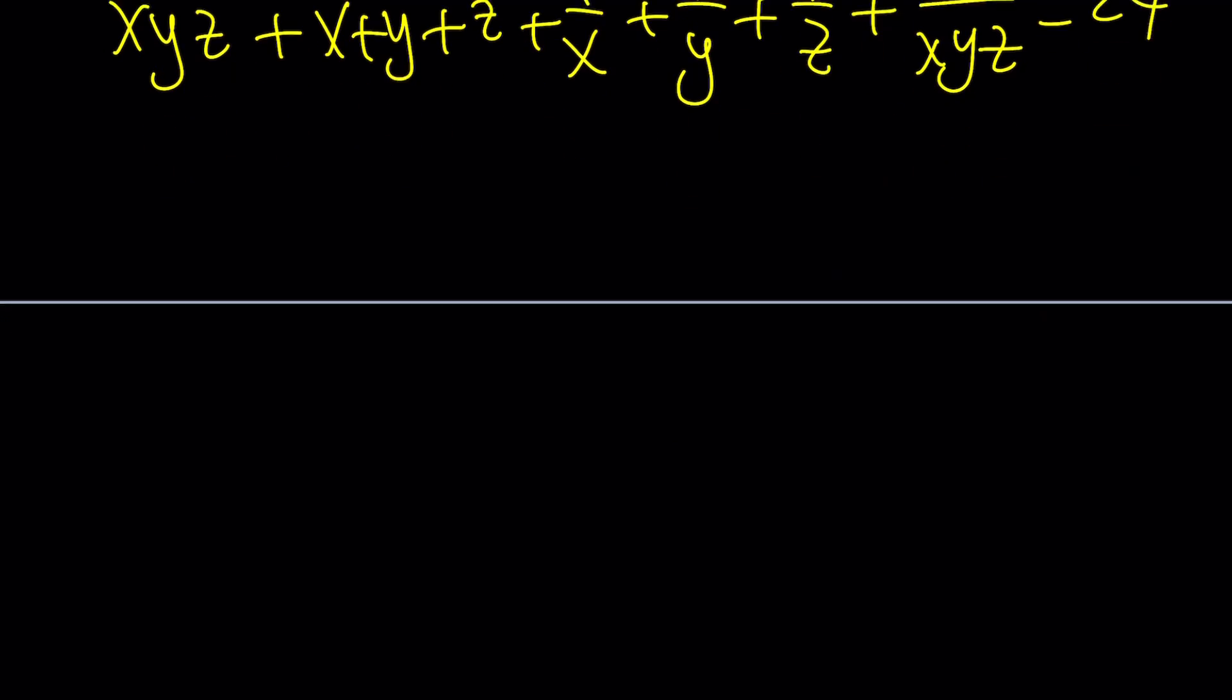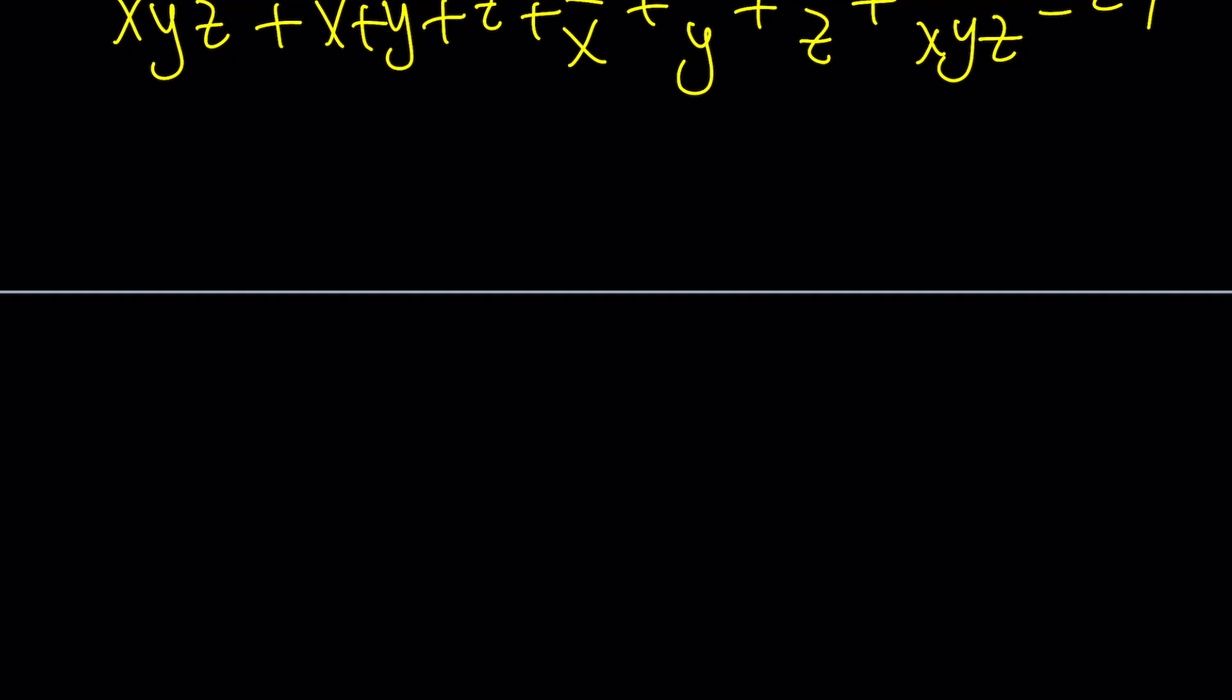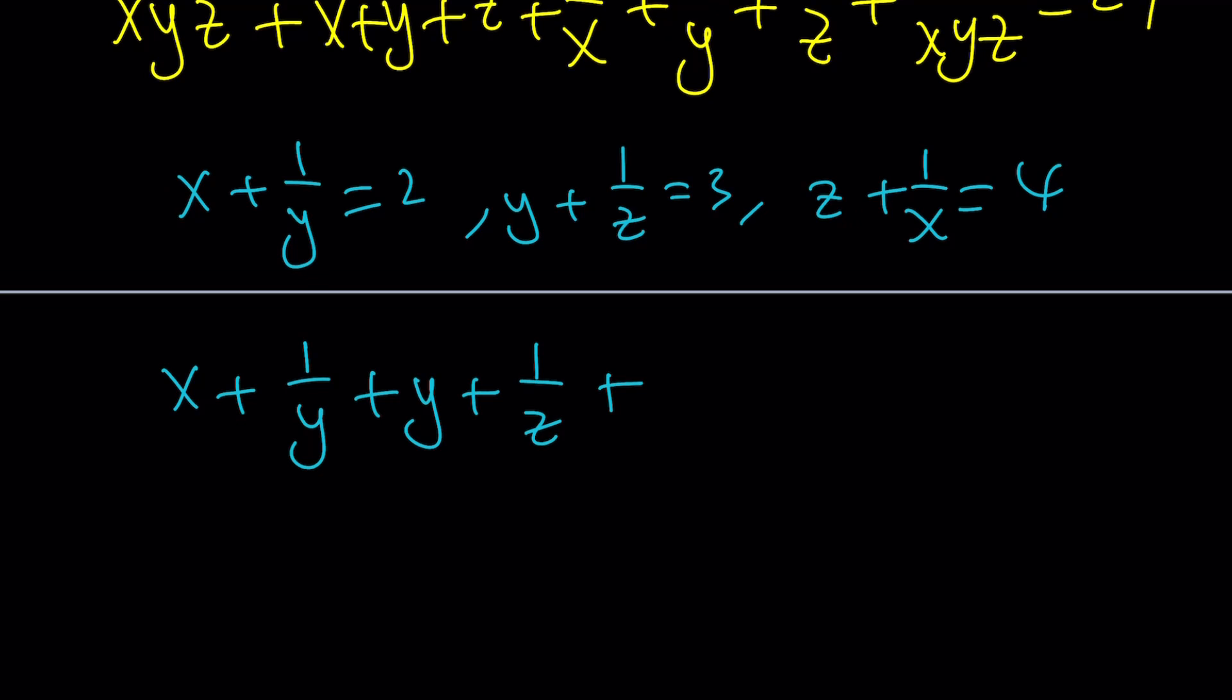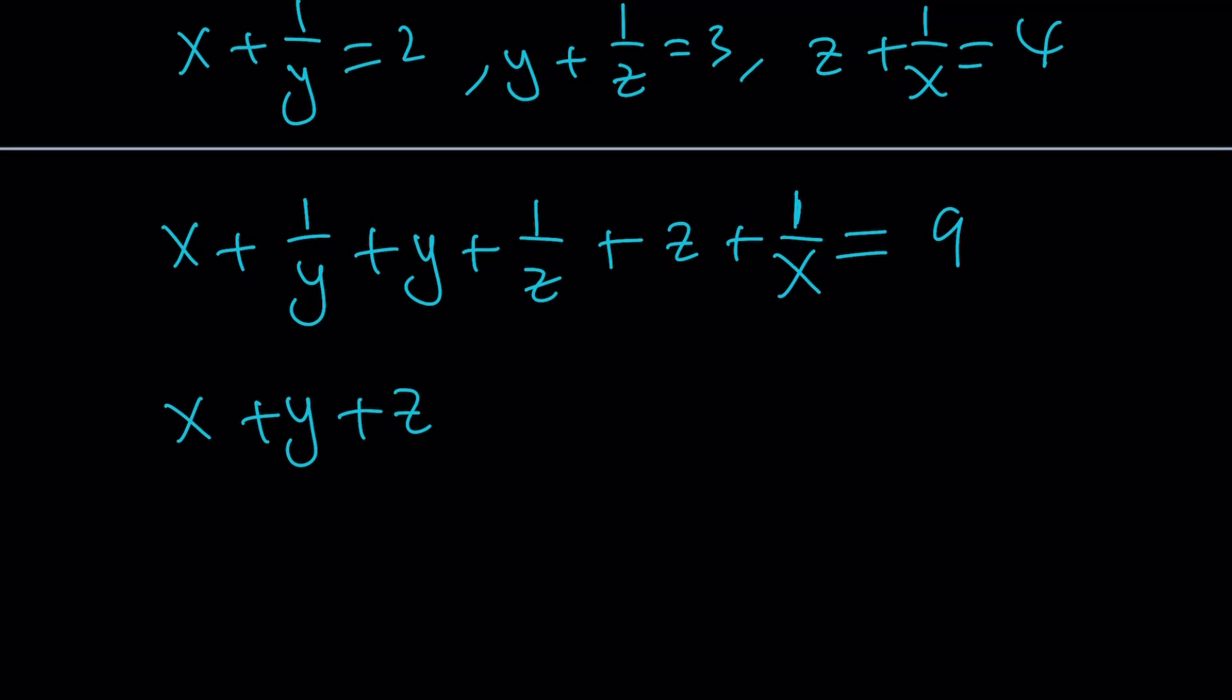So remember, what we did first was multiply these together, right? What were they? x plus 1 over y equals 2, y plus 1 over z equals 3, and z plus 1 over x equals 4. Now, we're going to go ahead and add them. Why? Because it's going to give us the sum of x, y, z, and the sum of the reciprocals, which is something that is going to be very helpful, okay? So we're going to add these all together, and 2 plus 3 plus 4 is going to be 5 plus 4, which is 9. Awesome.